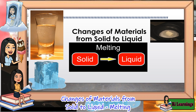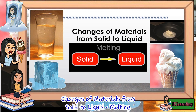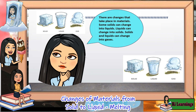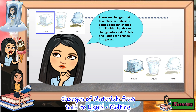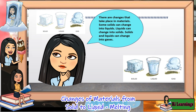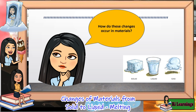Changes of materials from solid to liquid. Do you know that there are changes that take place in materials? Some solids can change into liquids. Liquids can change into solids. Solids and liquids can change into gases. The question is, how do these changes occur in materials? Let's find out!